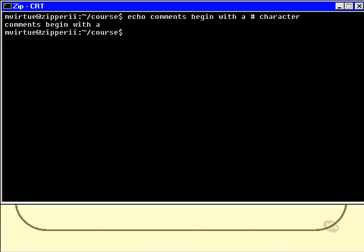So the echo program is not even seeing the hash or the word character. All the echo program ever gets to see, all it ever gets passed from the shell, are the words comments begin with a, which it of course duly echoes straight back out to the screen.